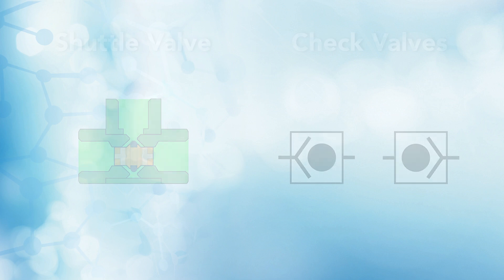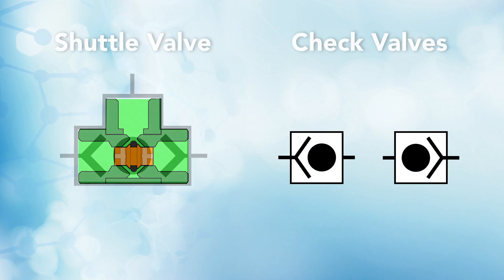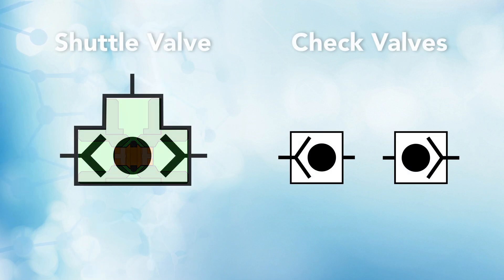It is more similar to combining a couple of check valves together compared to acting like a true selector valve. A shuttle valve is commonly called an OR valve because it has one input at a time from two different locations.